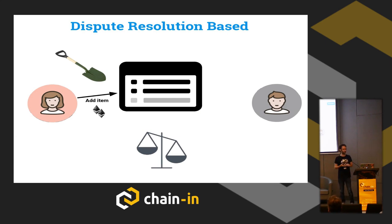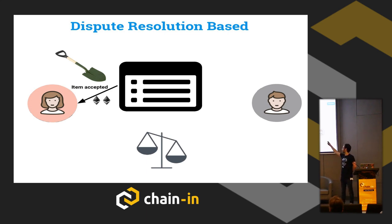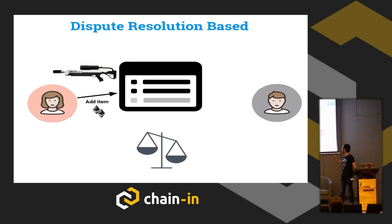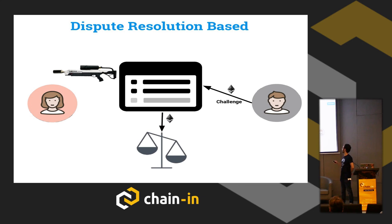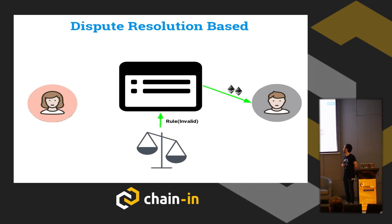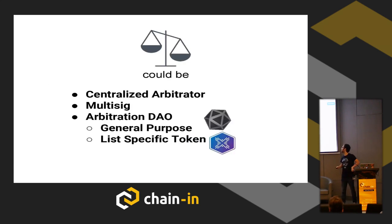Now let's go to the deposit-based dispute resolution curated list. Here we have a list of gardening tool equipment. Alice wants to list a shovel, so she puts a deposit. A few hours later, no one has complained, so the item is listed and she gets the deposit back. But if Bob wants to list a flamethrower, Bob — who may be browsing the platform or actively looking at new listings — notices the flamethrower and puts a deposit to challenge it. It goes to dispute resolution. Alice argues a flamethrower can remove bad plants; Bob argues it's a weapon, not a gardening tool. The arbitration mechanism decides Bob is right, so Bob gets Alice's deposit back and the arbitration fee back. The arbitrator can be a centralized moderator, as we see on centralized platforms, who decides which content should be there.